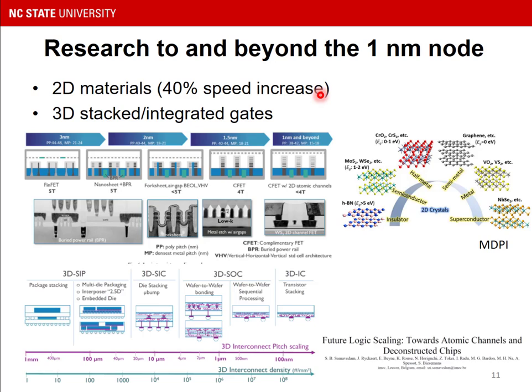The question of what's beyond the 2nm node — particularly at 1nm and beyond — is a research question. One direction is replacing the silicon in the channel with a 2D material. 2D material has an asymmetric crystal geometry where the material consists of layers of sheets of atoms that are stacked. For example, graphene — as used in lead pencils — is a layer of sheets of carbon, and is one of the materials being investigated, though other materials seem more likely.